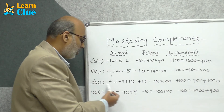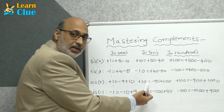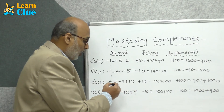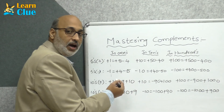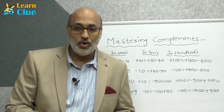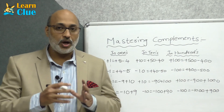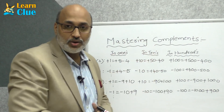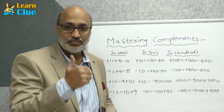Likewise in tens complements, +1 = −9 + 10. In tens place it becomes: +10 = −90 + 100. We just add one zero for tens place and two zeros for hundreds place calculations. Now we are going to learn some problems and how to apply these techniques in tens place and hundreds place. Let's go to the next level of advanced problems.